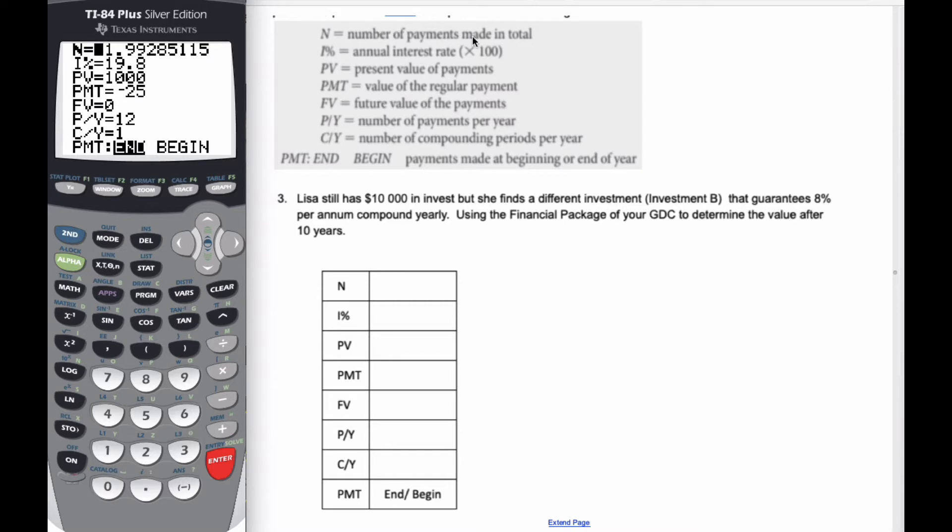N is the number of payments made in total. So how many times is this going to compound, or how many payments in total are you going to have? We're just going to do it for 10 years. It's not monthly, it just happens once every year. It's compounded yearly, so we have 10 years in total. So that's fairly straightforward.